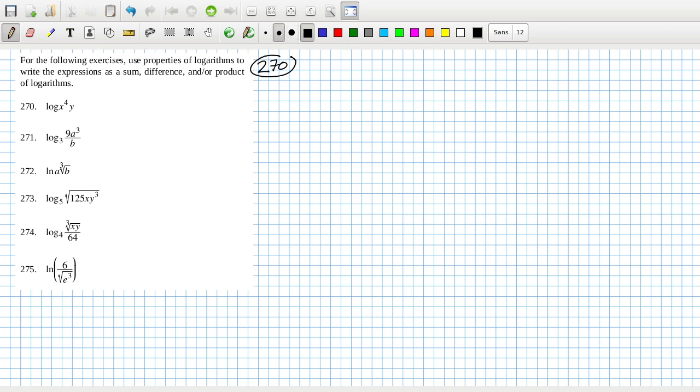For 270, we can change this into log x^4 plus log y. That's using the rule that says log ab is log a plus log b, and then the powers you're allowed to bring them down in front.